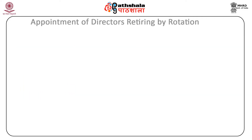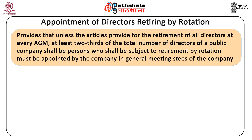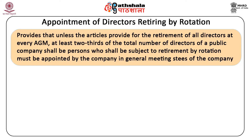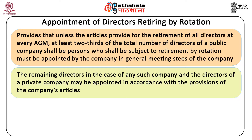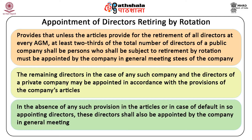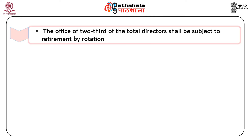Appointment of directors retiring by rotation: Section 152 provides that unless the articles provide for the retirement of all directors at every annual general meeting, at least two-thirds of the total number of directors of a public company shall be persons subject to retirement by rotation and must be appointed by the company in a general meeting. The remaining directors in the case of any such company, and the directors of a private company, may be appointed in accordance with the provisions of the company's articles. In the absence of any such provision, these directors shall also be appointed by the company in a general meeting. The office of two-thirds of the total directors shall be subject to retirement by rotation. These are called rotational directors.